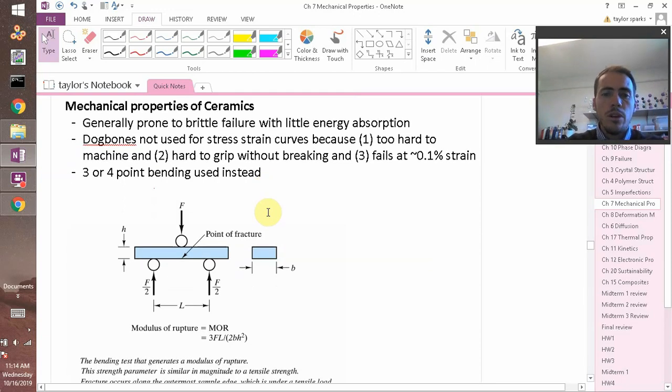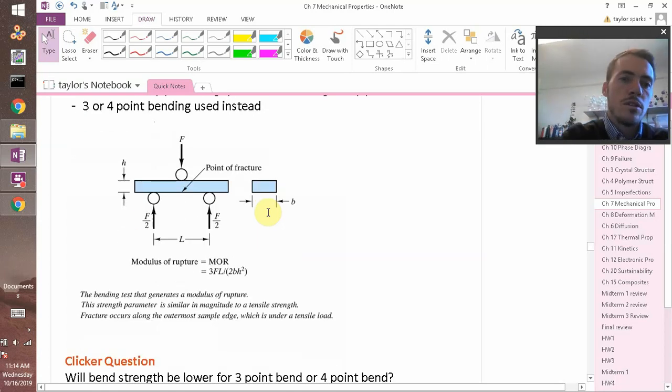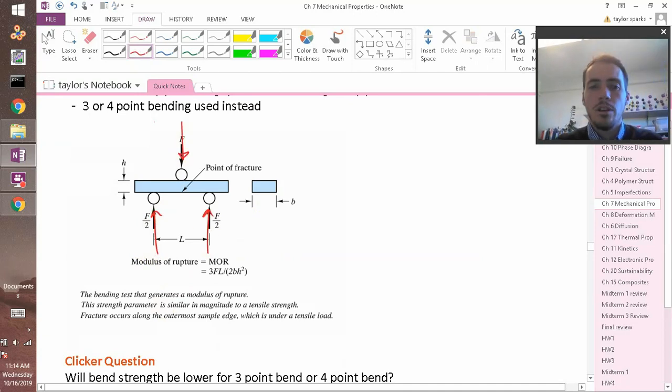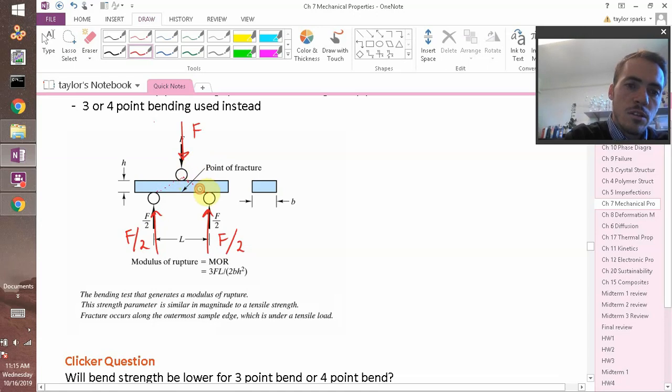Dog bones aren't going to work well, but you could instead do three or four point bending. Here's how it works. You've got your sample. As you can see in this image, you apply loads in a way that it creates a bending moment in your material. You've got one force at the top and then you've got force divided by two on these two bottom posts. What that does is it creates a bending moment in your material that increases up to a maximum and then it decreases. In other words, there's one point in your material that experiences a maximum bending moment. That's right here.